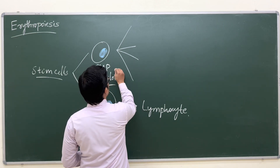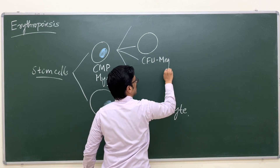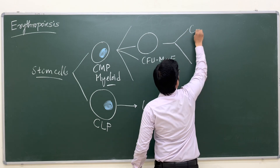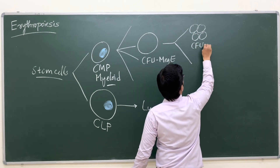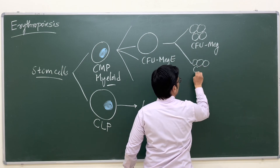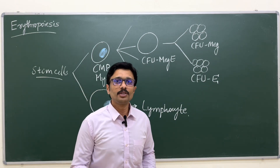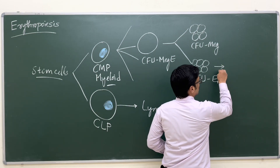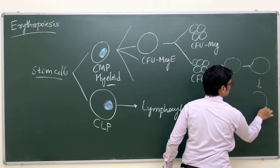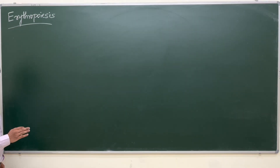We'll focus on the particular colony that gives rise to red blood cells. The common myeloid progenitor differentiates into a colony called the colony forming unit megakaryocyte-erythroid (CFU-Meg E). From this CFU-Meg E, two more colonies are formed: the colony forming unit megakaryocyte (CFU-Meg) and the colony forming unit erythroid (CFU-E), from which red blood cells are synthesized through different stages.